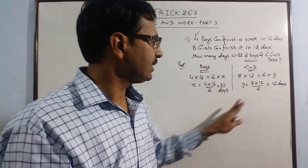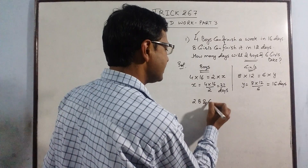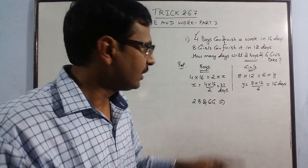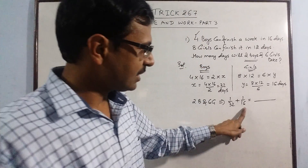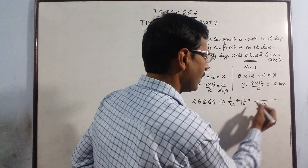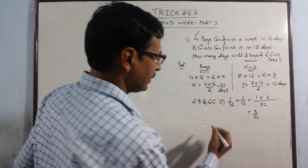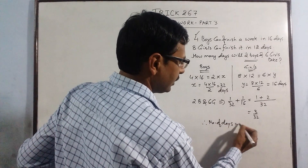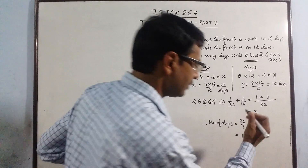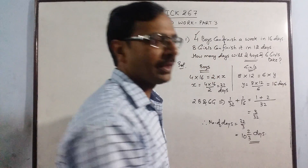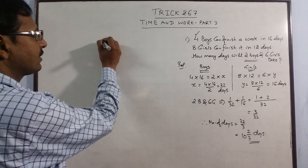So 2 boys take 32 days and 6 girls take 16 days. Using the reciprocal method: 1/32 + 1/16 = 1/32 + 2/32 = 3/32. Taking the reciprocal gives 32/3, which as a mixed fraction is 10 and 2/3 days — the correct answer for this time and work problem.